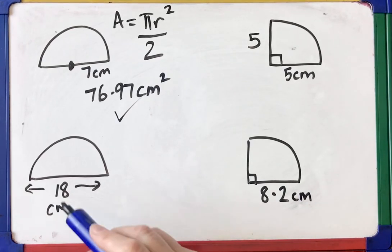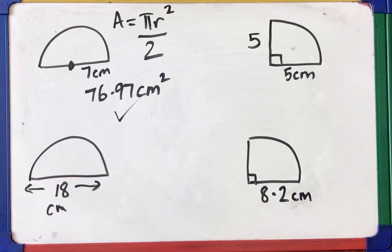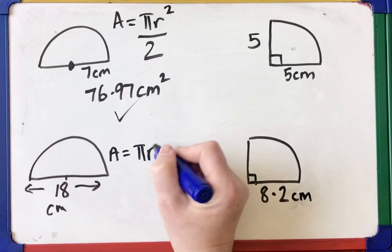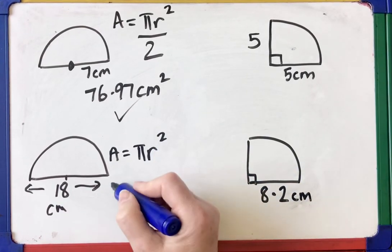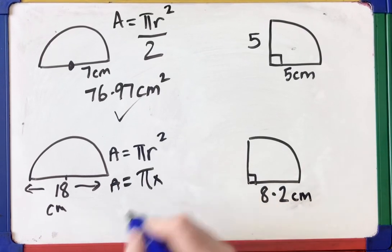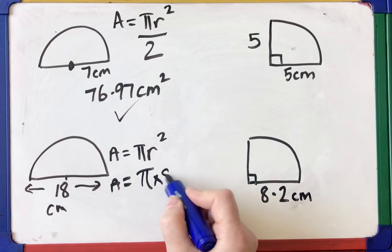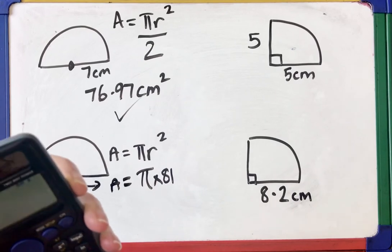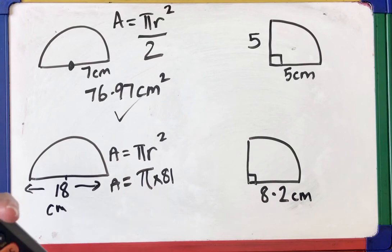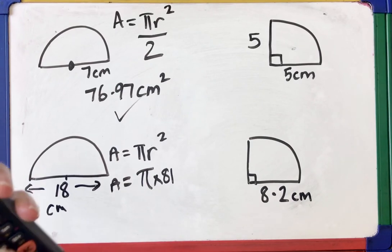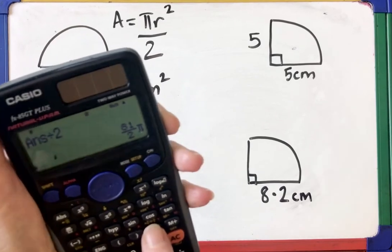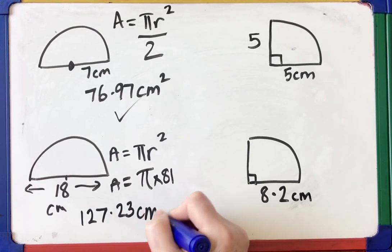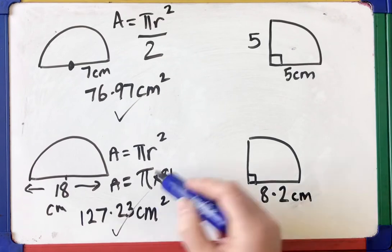For the semicircle with diameter 18: it's very important to find the radius first. The radius is 9, so the area of the full circle is pi times 9 squared, which is 81 pi. Divide by 2 for the semicircle, giving 127.23 centimetres squared.